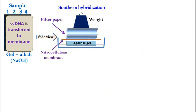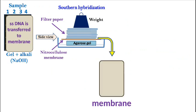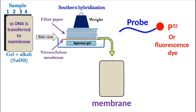The next step is to detect our desired fragment present in the membrane using a probe. The probe is a single-stranded DNA which is labeled with P32. This single-stranded probe is complementary to the DNA fragment which we want to detect on the membrane.